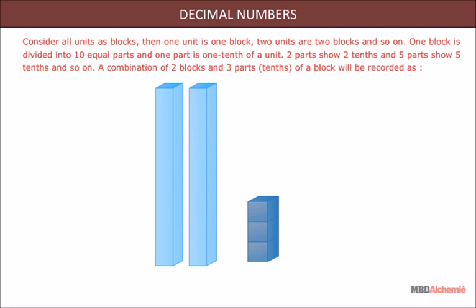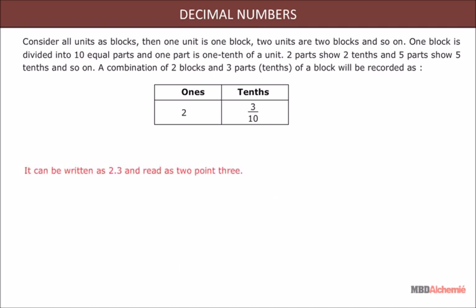A combination of two blocks and three parts tenths of a block will be recorded as 2.3. It can be written as 2.3 and read as two point three. The last numeral is called a decimal fraction or just a decimal.